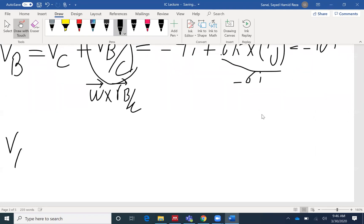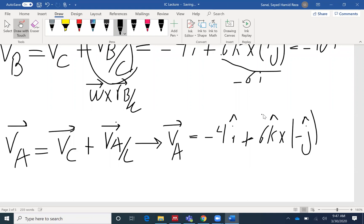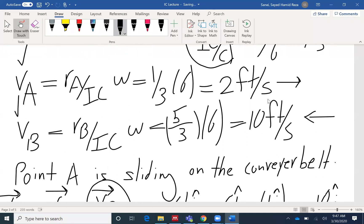But I can use velocity at A, velocity at C, V_A with respect to C. So I can use the same approach to find velocity at A. Velocity at C is negative 4i. Omega again is a positive value, 6k. The only difference is that R_A/C here is negative j. So this component would give me positive i. Negative 4i plus positive 6i will give me 2i in that positive direction, which is the same as what we found here.